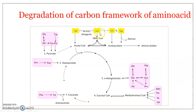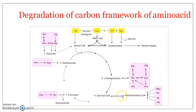The first group — isoleucine, leucine, lysine, and tryptophan — ultimately gets converted to acetyl-CoA, which then enters the Krebs cycle. The second group — glutamine, glutamate, histidine, ornithine, proline, and arginine — gets converted to alpha-ketoglutaric acid. Methionine, threonine, isoleucine, and valine get converted to succinyl-CoA via methylmalonyl-CoA. Phenylalanine and tyrosine get converted to fumarate and acetyl-CoA.